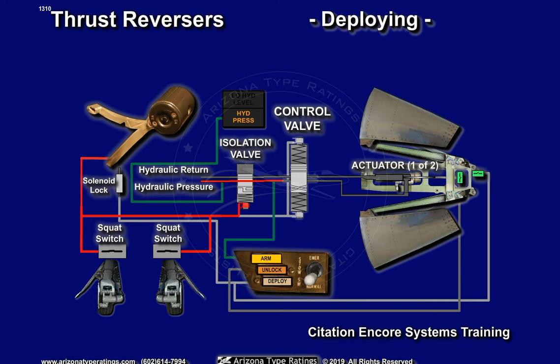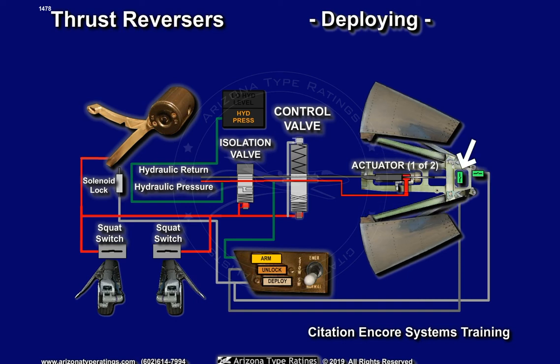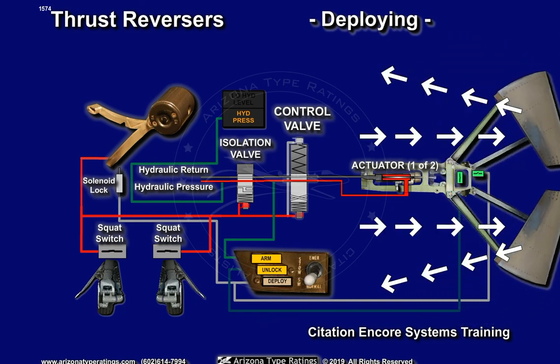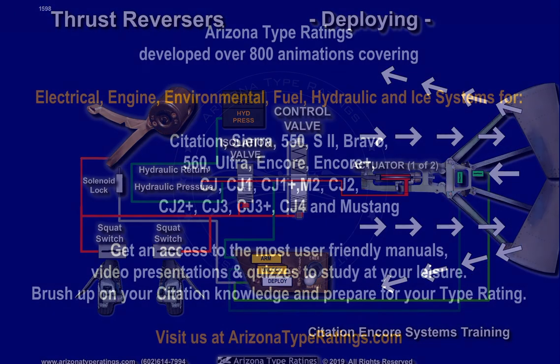The reverser control valve is activated to the deploy position. Hydraulic pressure causes the pistons in the actuators to pull the bar mechanism to flip the doors to the deployed position. As soon as the piston moves, the unlock switch will illuminate the unlock enunciator, indicating that the doors have started to move. When the doors are fully deployed, the deploy switch will illuminate the deploy enunciator.